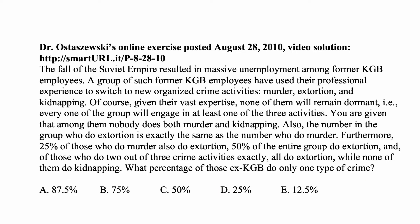Here's a problem for today for exam P on probability. The fall of the Soviet empire resulted in massive unemployment among former KGB employees. A group of such former KGB employees have used their professional experience to switch to new organized crime activities: murder, extortion, and kidnapping. Given their vast expertise, none of them will remain dormant, so every one of the group will engage in at least one of the three activities.